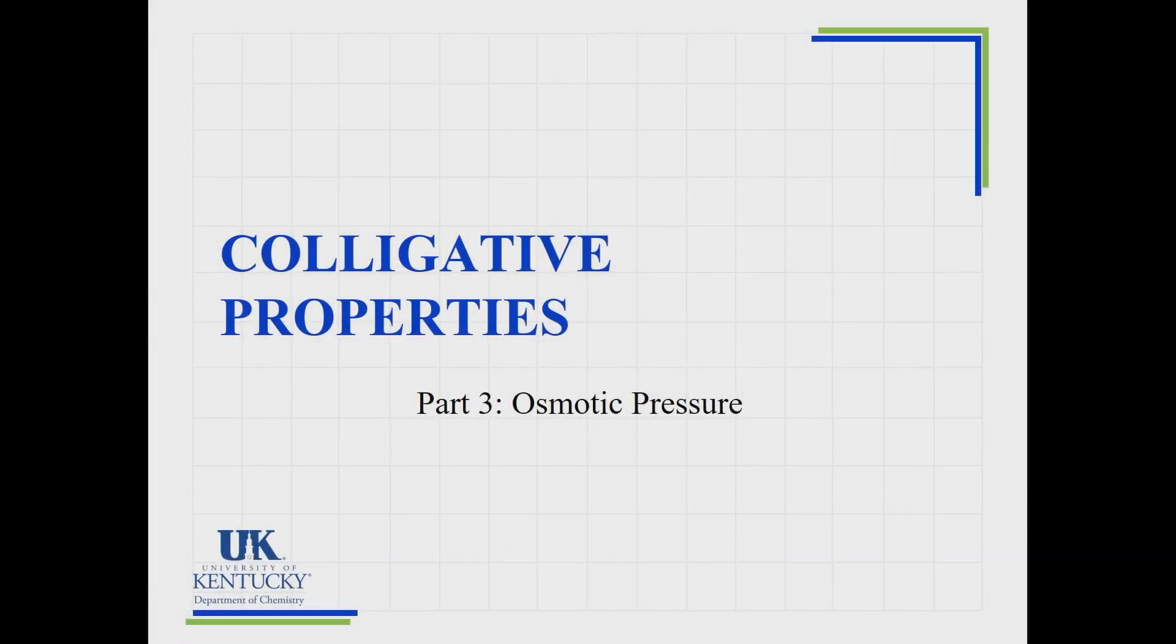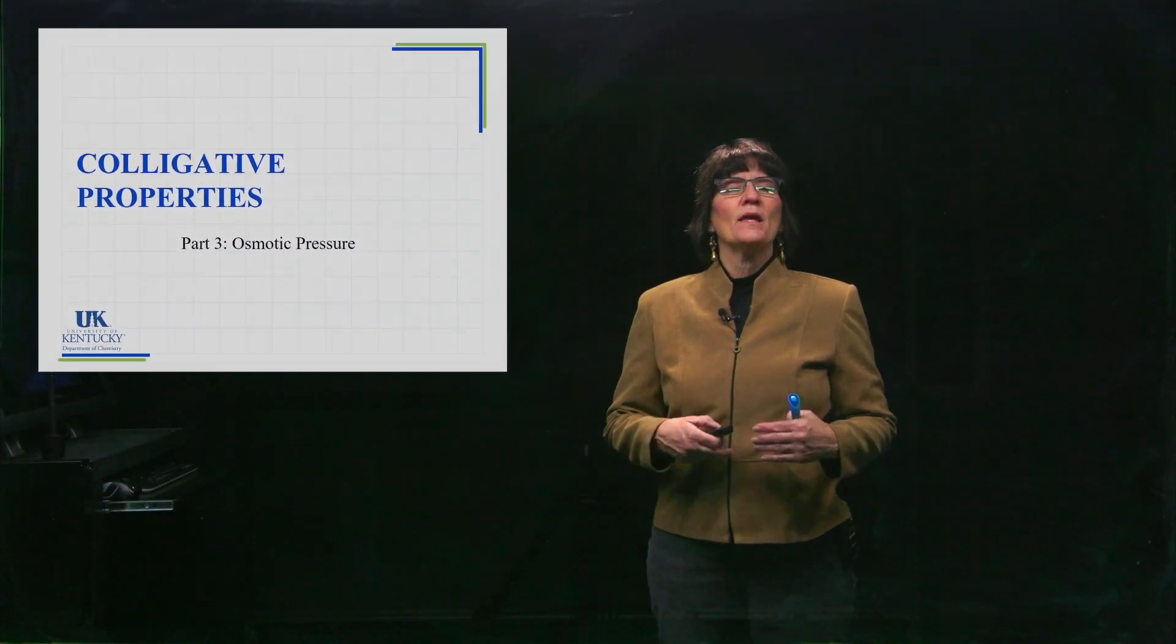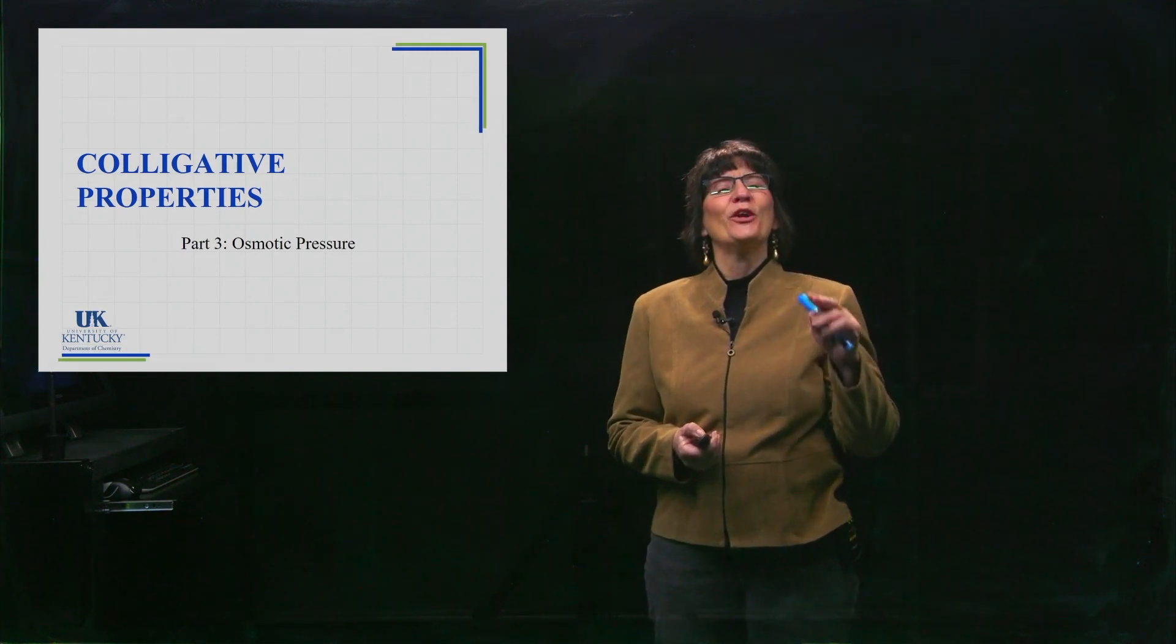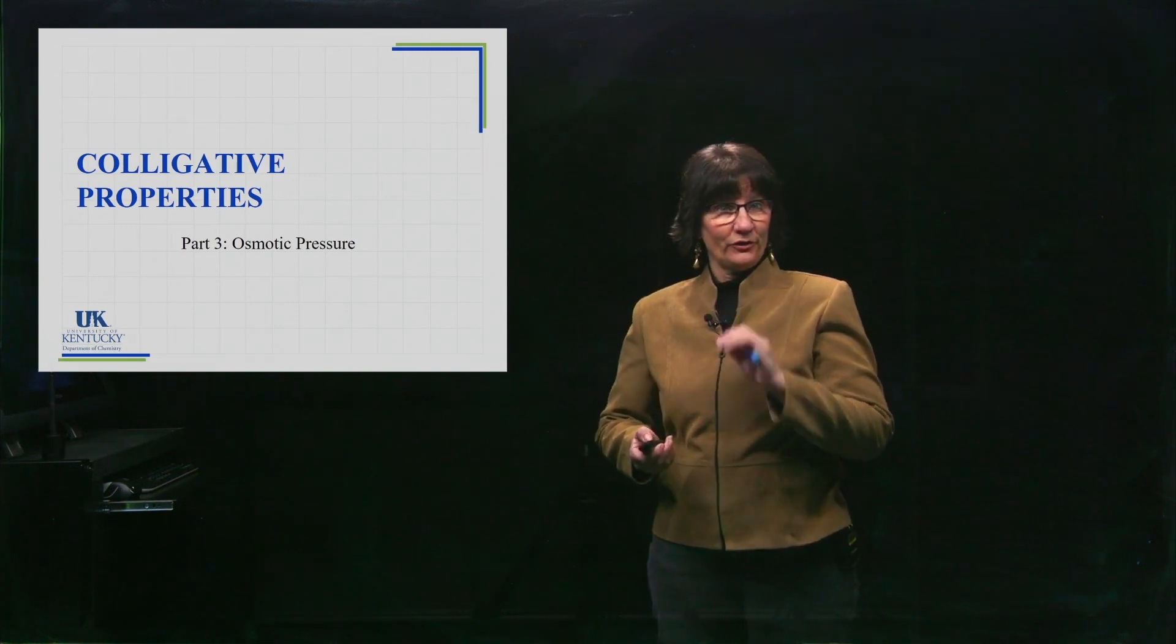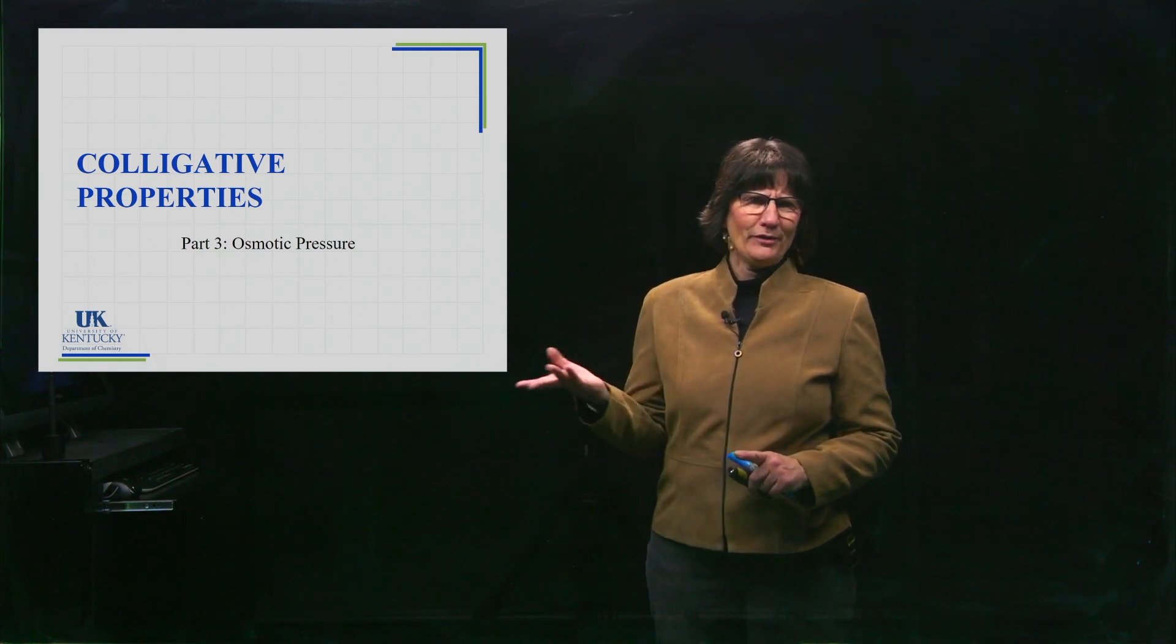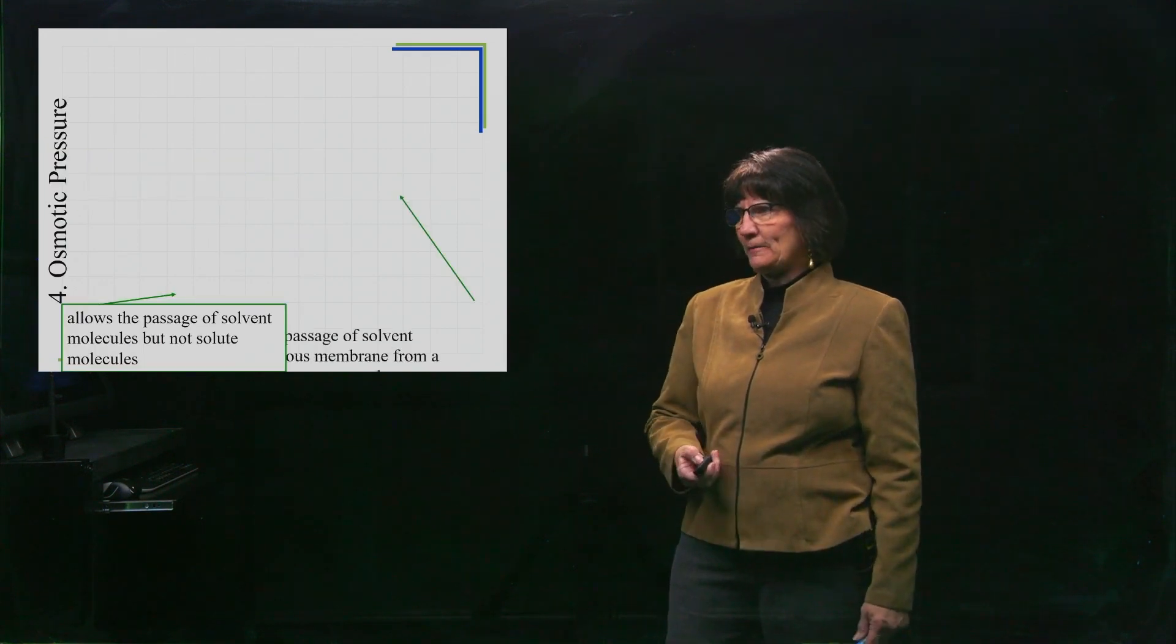Okay, the last colligative property is called osmotic pressure. Osmotic pressure is something that we have to learn how to operate by learning about osmosis first. With the other ones, we've already learned about vapor pressure and we've learned what a boiling point and a freezing point are, so we didn't have to do this background. Let's do a little bit of background here.